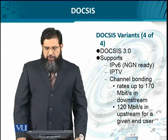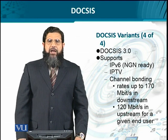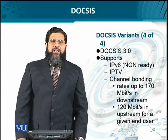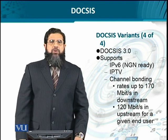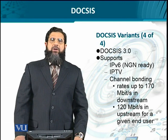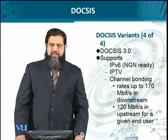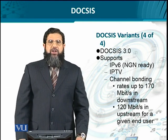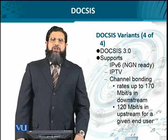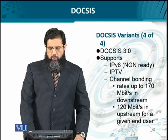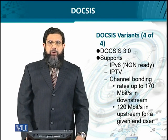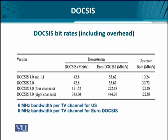In DOCSIS 3.0, support came in for IPv6, which is highly NGN-suitable, because NGN assumes the underlying core to be IP-based and preferably IPv6-based. Support for IPTV also came in. The concept of channel bonding was introduced — more than one frequency could be used to provide downstream data rates up to 170 Mbps, which is very high from an individual subscriber's point of view, and upstream rates of around 120–127 Mbps. DOCSIS 3.0 not only increased features but also significantly increased data rates. This is the overall picture of how different DOCSIS variants have increasing data rates both on upstream and downstream.